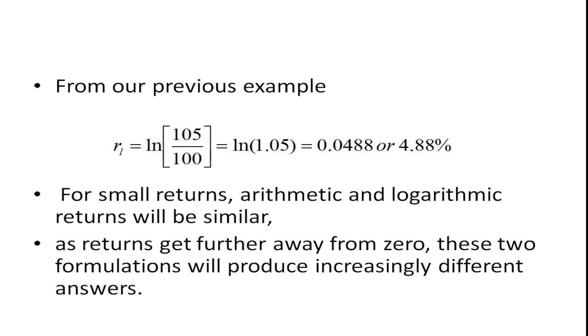So from the previous example we had, it turns out that if we use this logarithmic return, the return is not 5%, it's 4.88%. Actually, this is a return that has continuous compounding. And you may have seen that before. If you compound the return 5% once a year, you'll get a certain return. But if you do it twice a year, 2.5% twice a year, you'll actually have more.